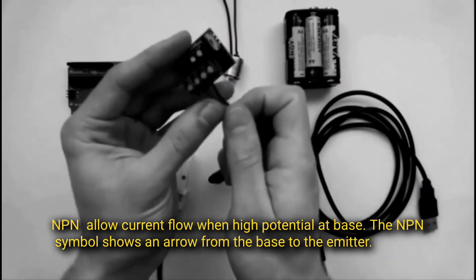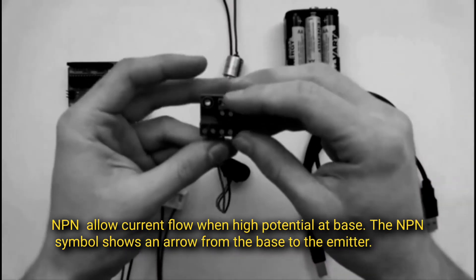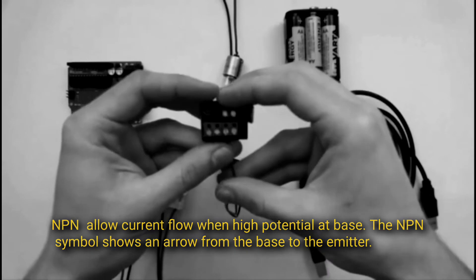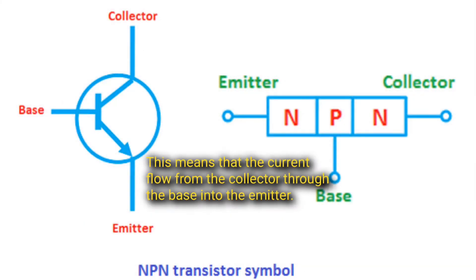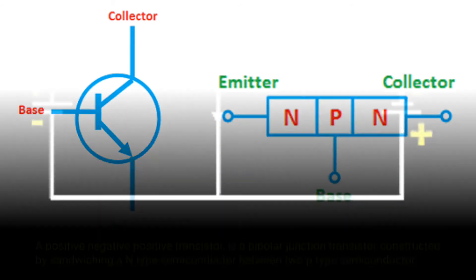The NPN symbol shows an arrow from the base to the emitter, meaning that the current flows from the collector through the base into the emitter.